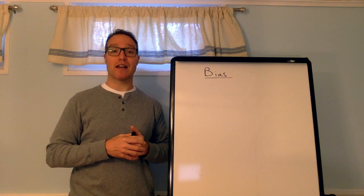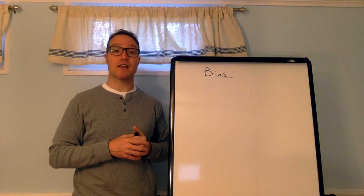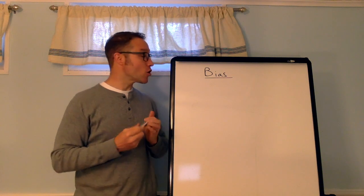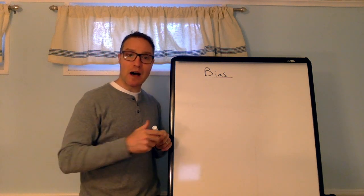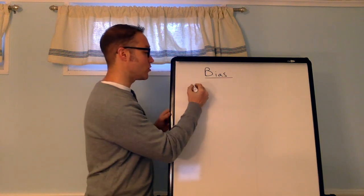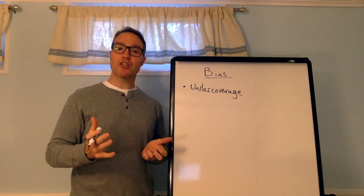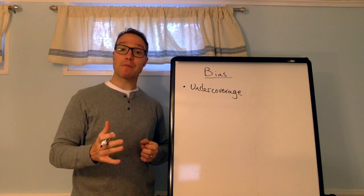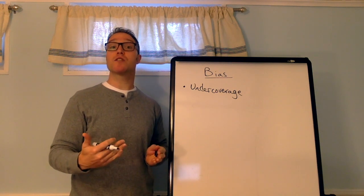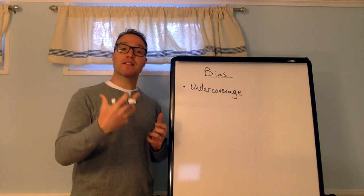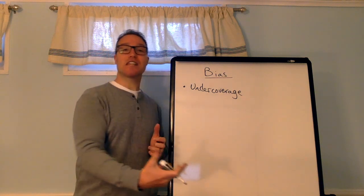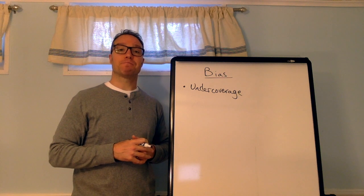Okay, so here's some forms of bias that might appear in surveys and samples. The first one is called undercoverage. Sounds like a spy, right? He's gone undercoverage. Undercoverage occurs when some members of the population cannot be chosen in a sample. So, when your sampling method leaves out portions of the population.